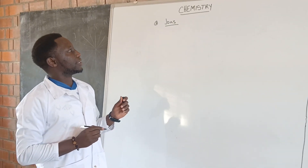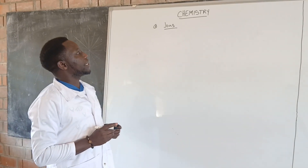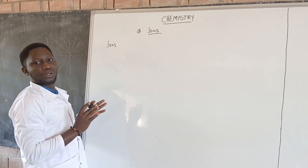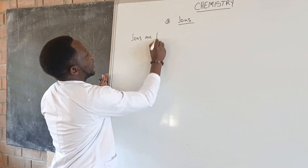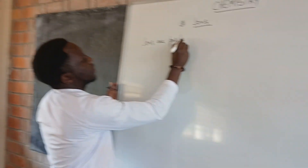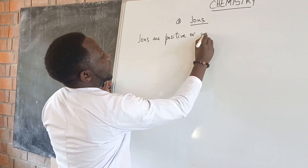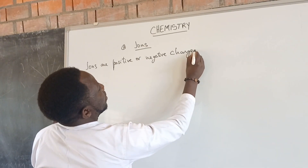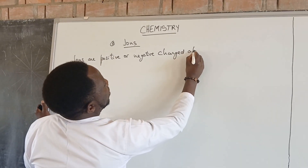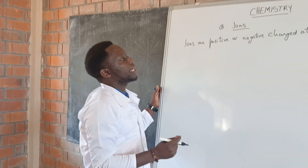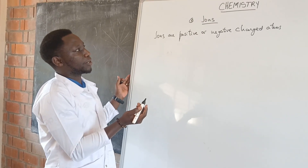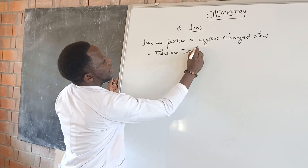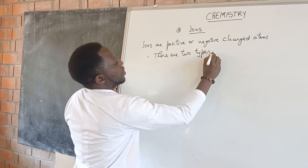We are going to talk about ions. Let's first get to the meaning of ions. Ions are the positive or negative charged atoms — you can also say they are the charged particles. There are two types of ions.